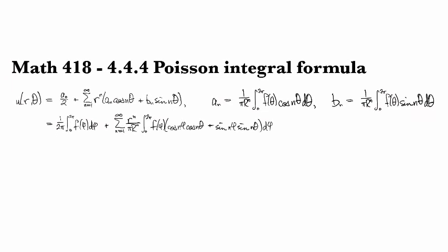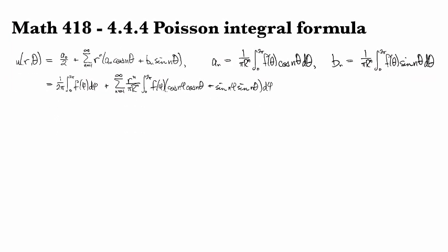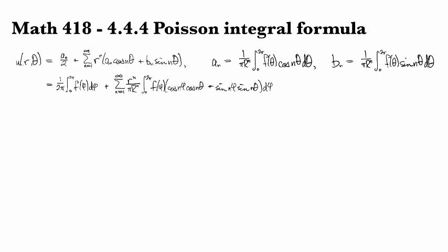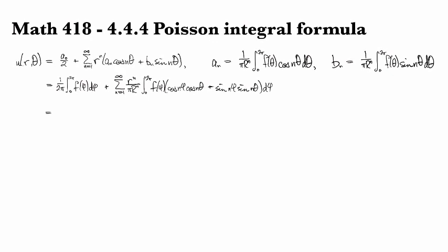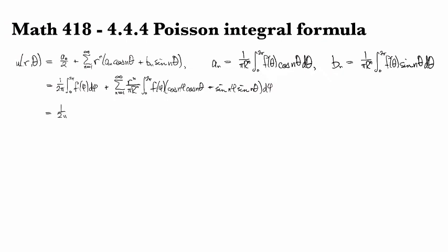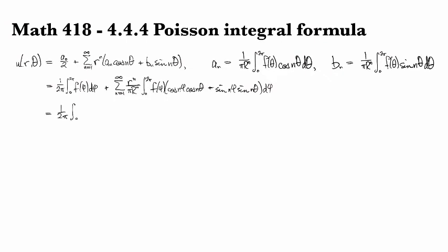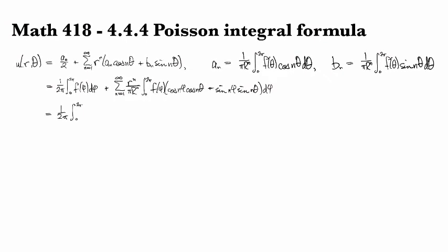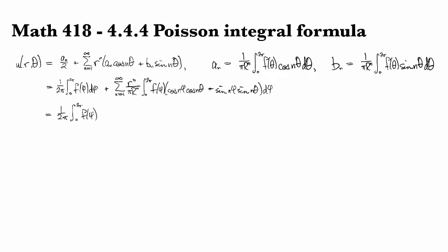And so now, by using a trigonometric identity, we can combine these terms and we have 1 over 2π times the integral 0 to 2π f(φ).